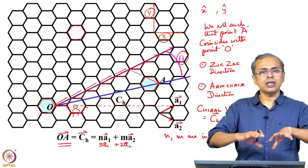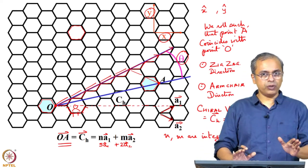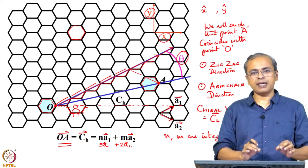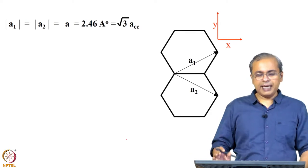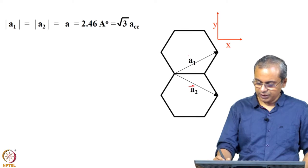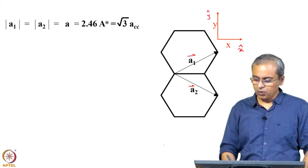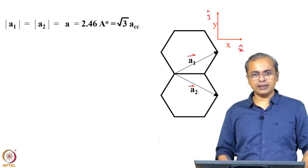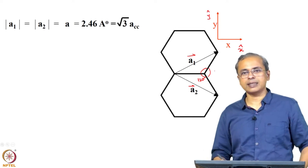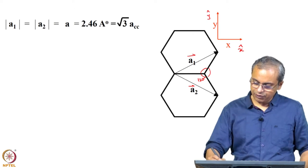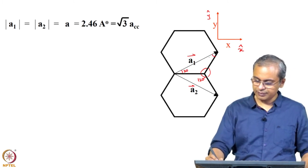If you know the n value and the m value, you will have a very good idea of what tube you have created, and from that we can ascribe properties to the tube. Now I have magnified the a1 and a2 vectors. With the lattice angles being 120 degrees, this gives 30-degree angles in the resulting triangle, which we will use to express a1 and a2 in terms of x̂ and ŷ.